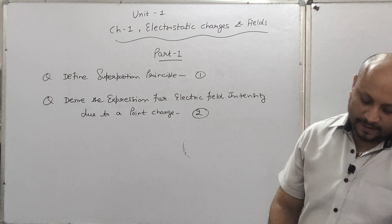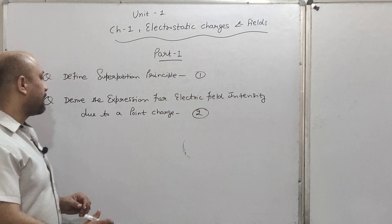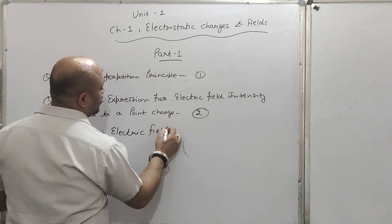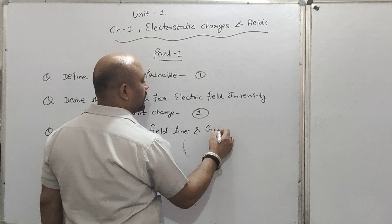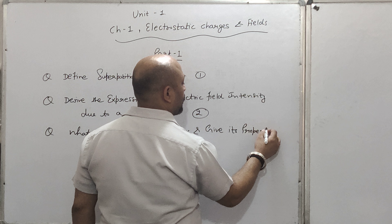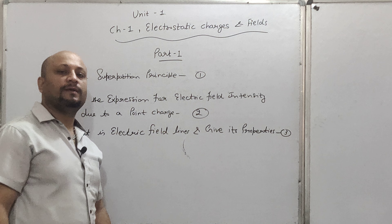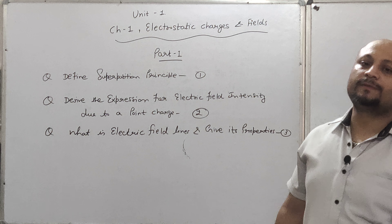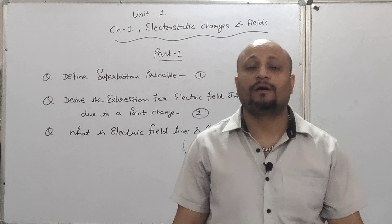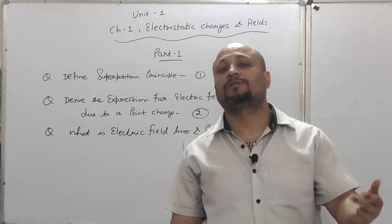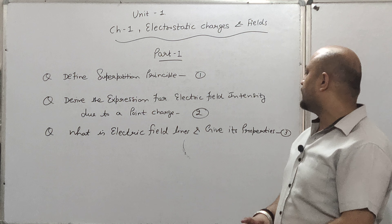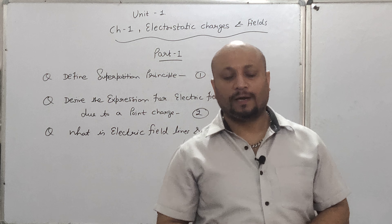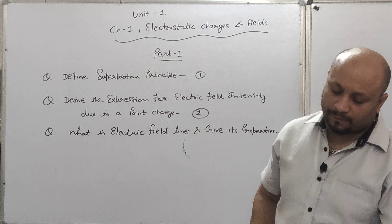इसके बाद बड़े important articles शुरू होते हैं। Three marks का question: What is Electric Field Lines and give its properties? Electric Field Line की definition: 'It is a straight or curved path such that the tangent to it at any point gives the direction of electric field intensity at that point।' यह definition एक mark की है और properties two marks की — लगभग चार properties देनी होंगी।